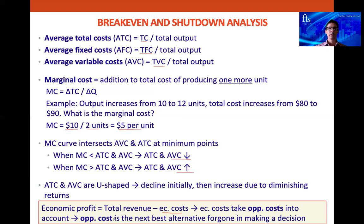Opportunity cost is the next best alternative foregone in making a decision. For example, what else could the plant and equipment have been used for? An accountant will never take opportunity costs into account — they just take total revenue minus accounting costs. But economists take both accounting costs and opportunity costs into account, and together these become economic costs.